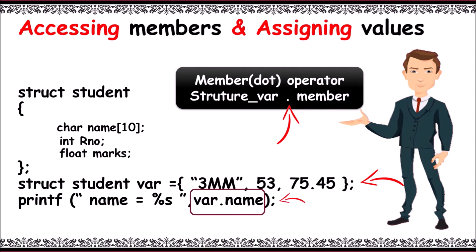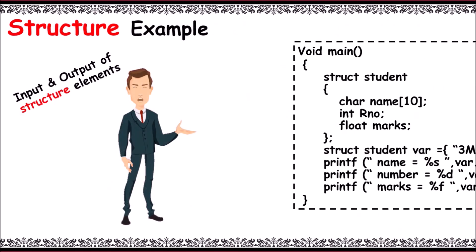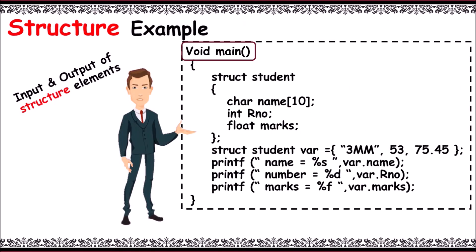Now structure example program: first, struct student with three members - name, rno, and marks - is declared. Next, assign values to structure variable members: 3MM, 53, 75.45.